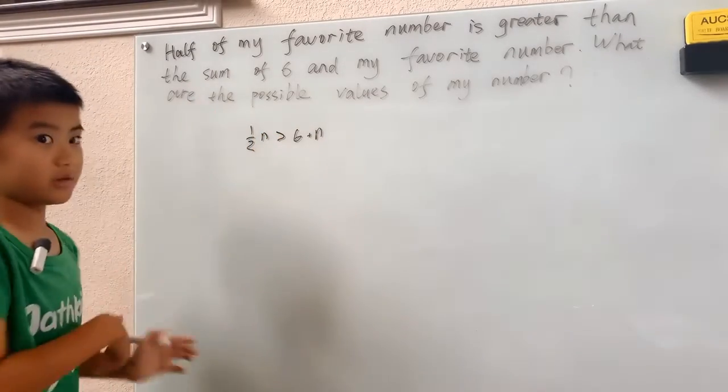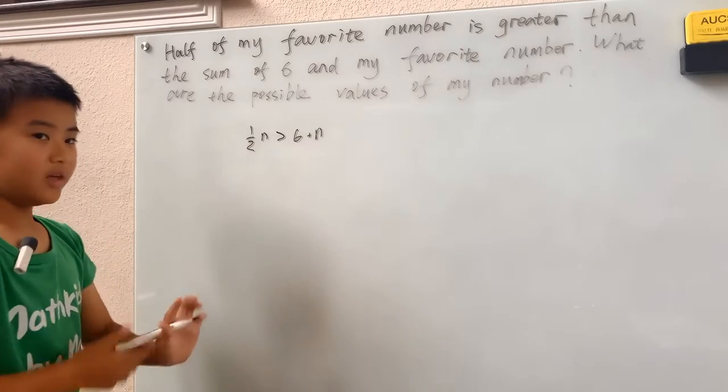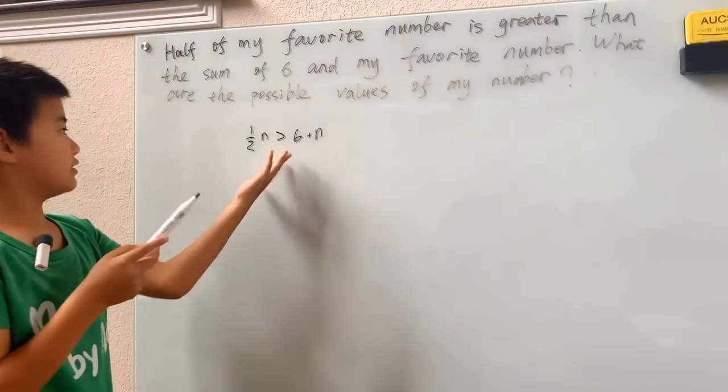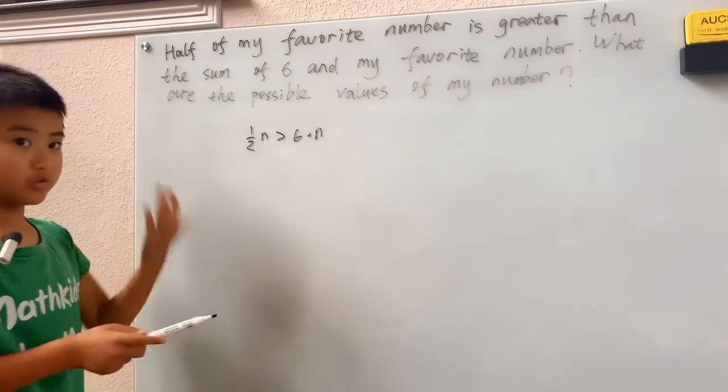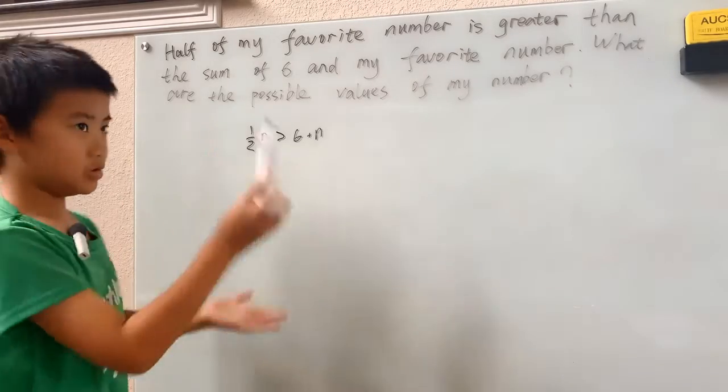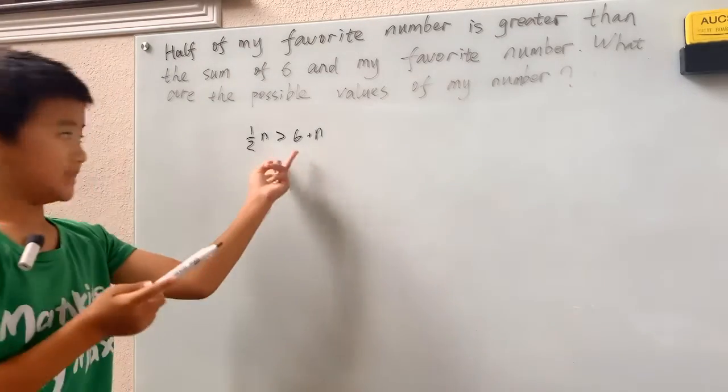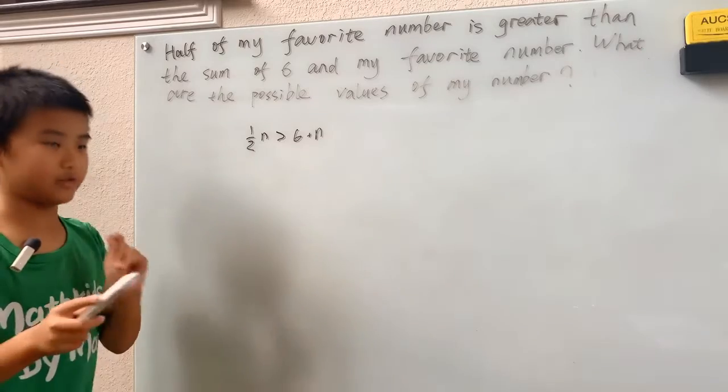I'll first draw that one half, multiply both sides by two. And again, we can treat inequality the same way we treat equations. Just multiply, divide, add or subtract the same number to both sides and you still have a true inequality.